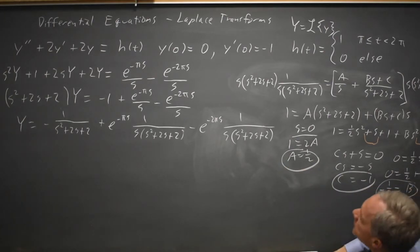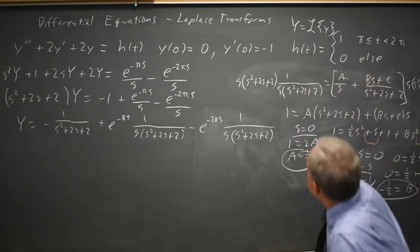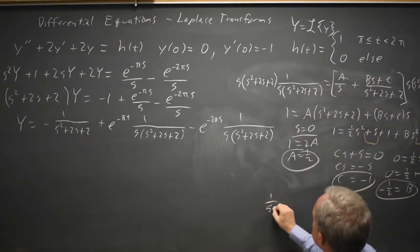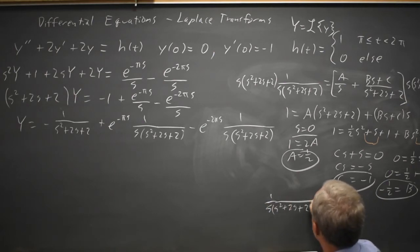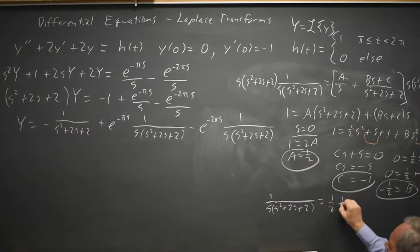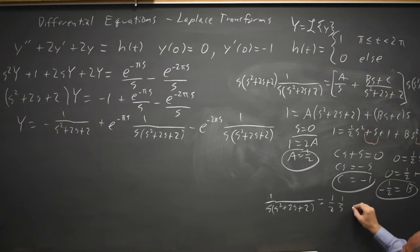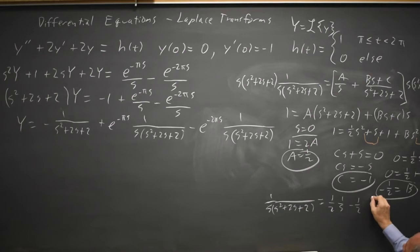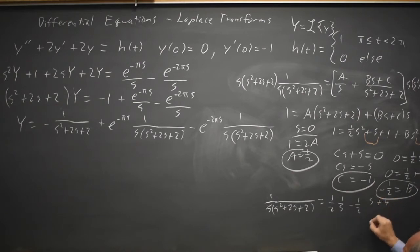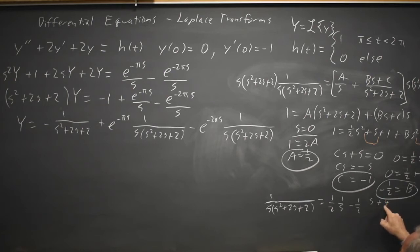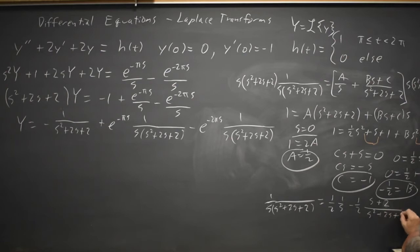So I have the partial fraction decomposition: 1 over s(s squared plus 2s plus 2) equals (1/2)(1/s) minus (1/2)(s plus 2) over (s squared plus 2s plus 2). That is (1/2)(1/s) minus (1/2)(s plus 2) over (s squared plus 2s plus 2), where the numerator s plus 2 does match our B and C values of negative 1/2 and negative 1.